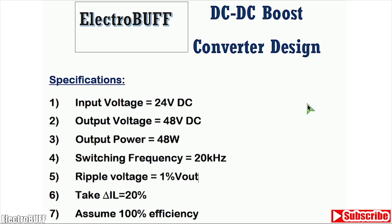For the design specifications, the input voltage is 24V and the output should be 48V. You also need to know the load, which can be specified in watts, resistance, or amperes — in this case 48 ohms. The switching frequency is 20kHz, which is typically between 20 and 100kHz. You also need to know the ripple voltage, either as a percentage of the output voltage or as an absolute voltage. The change in inductor current is taken as 20% of the average inductor current, and we assume an efficiency of about 100%.